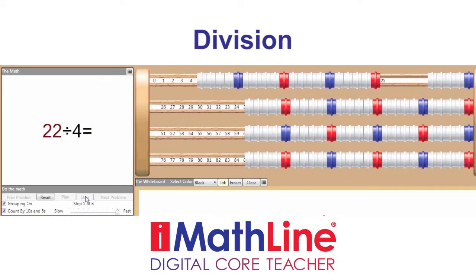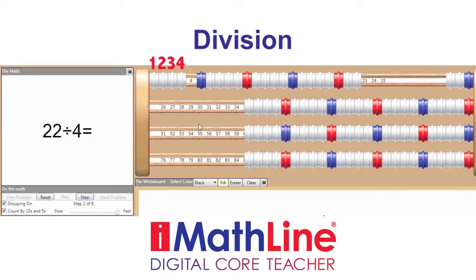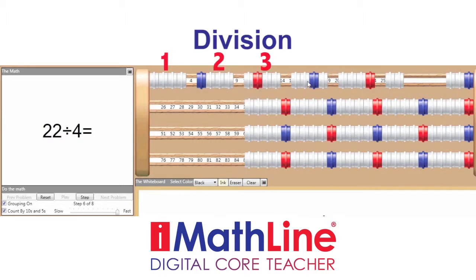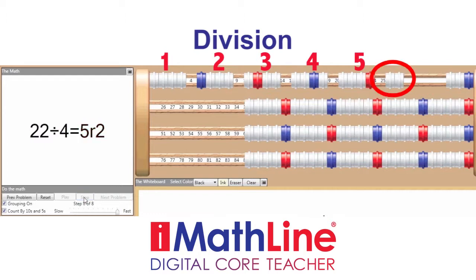We're going to do a basic division problem: twenty-two divided by four. On MathLine we put on twenty-two and divide by four. Four and divide — one, two, three, four and divide — repeating until iMathLine Core Math Teacher divides them for you. We count the groups: one, two, three, four, five, and we see a remainder of two. We step through and write our answer: five with a remainder of two.